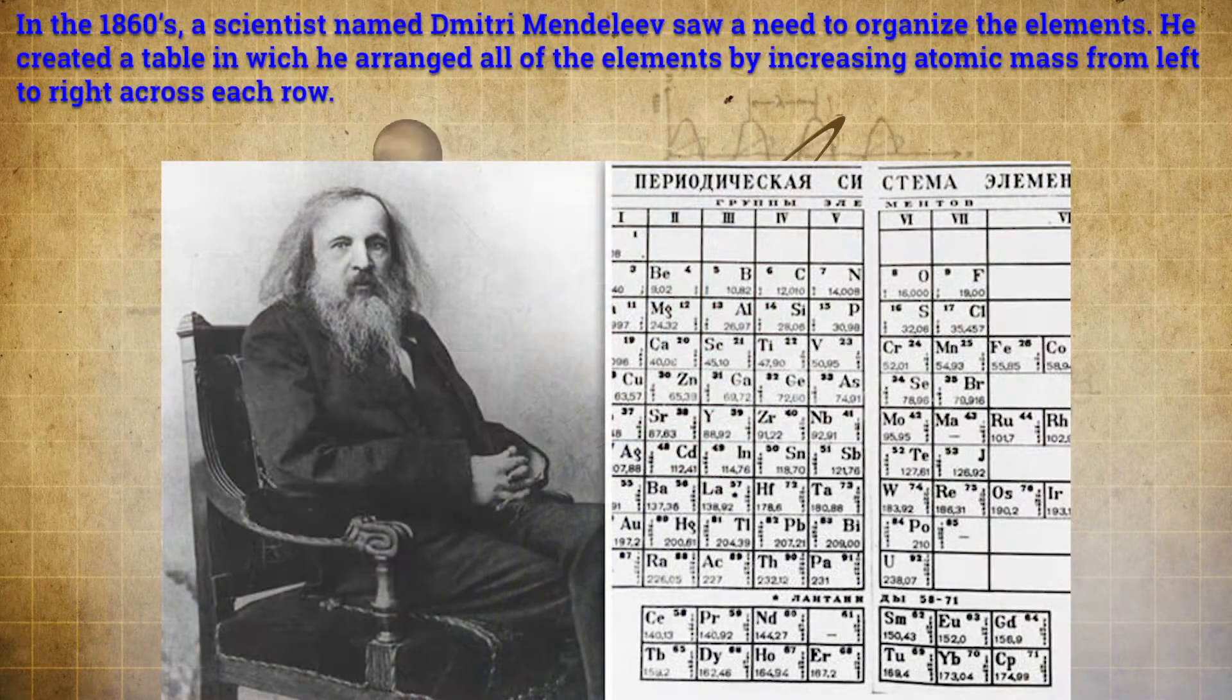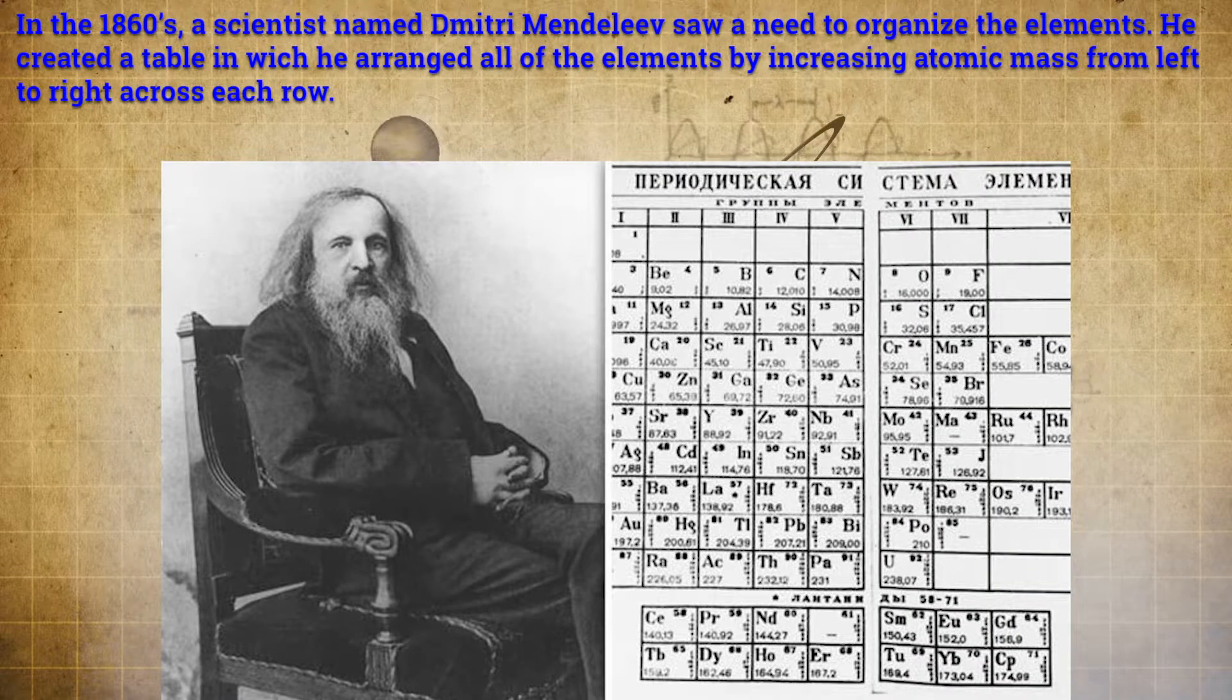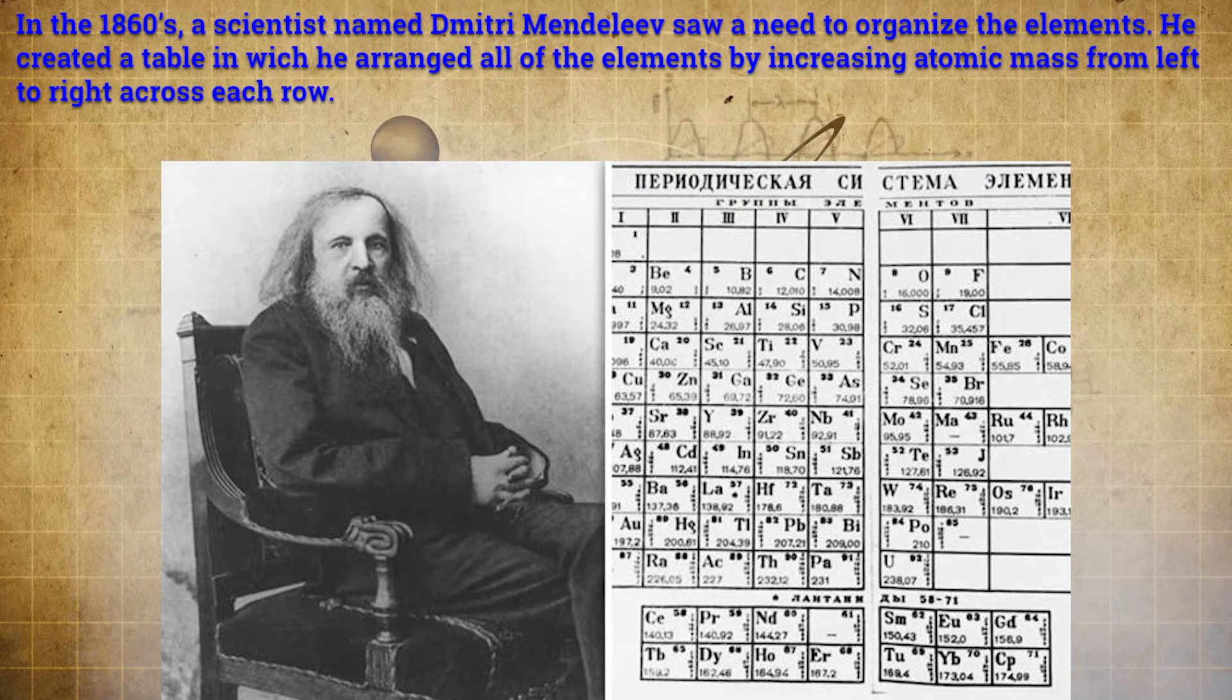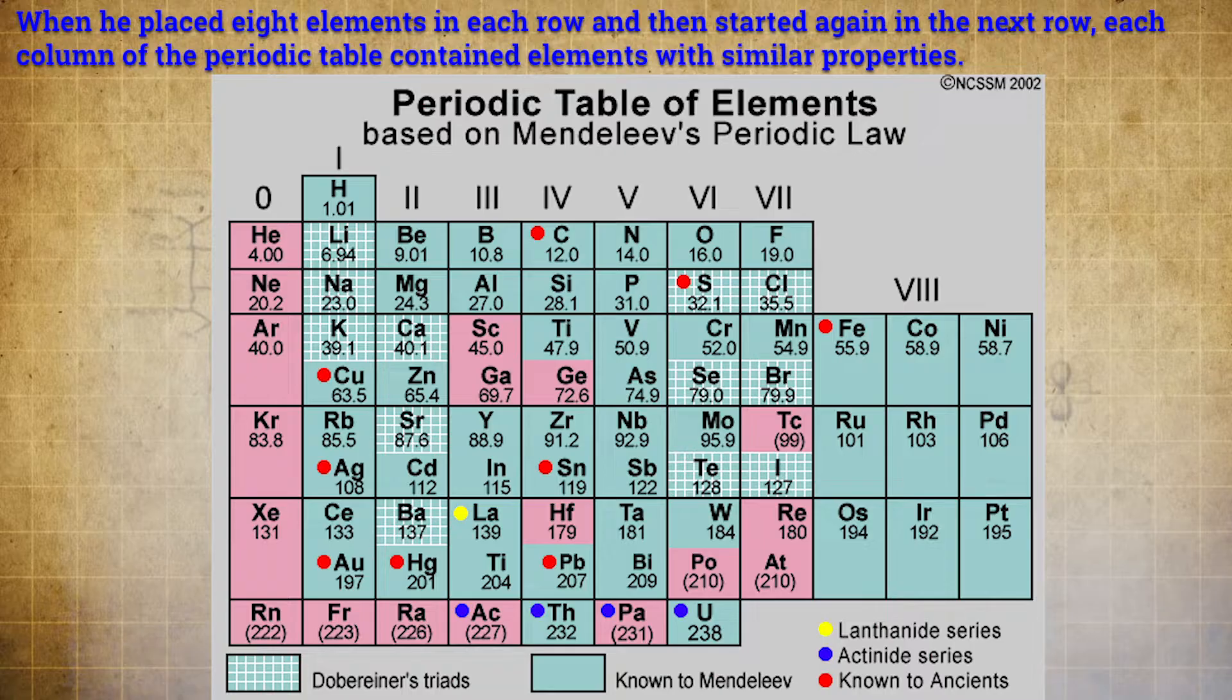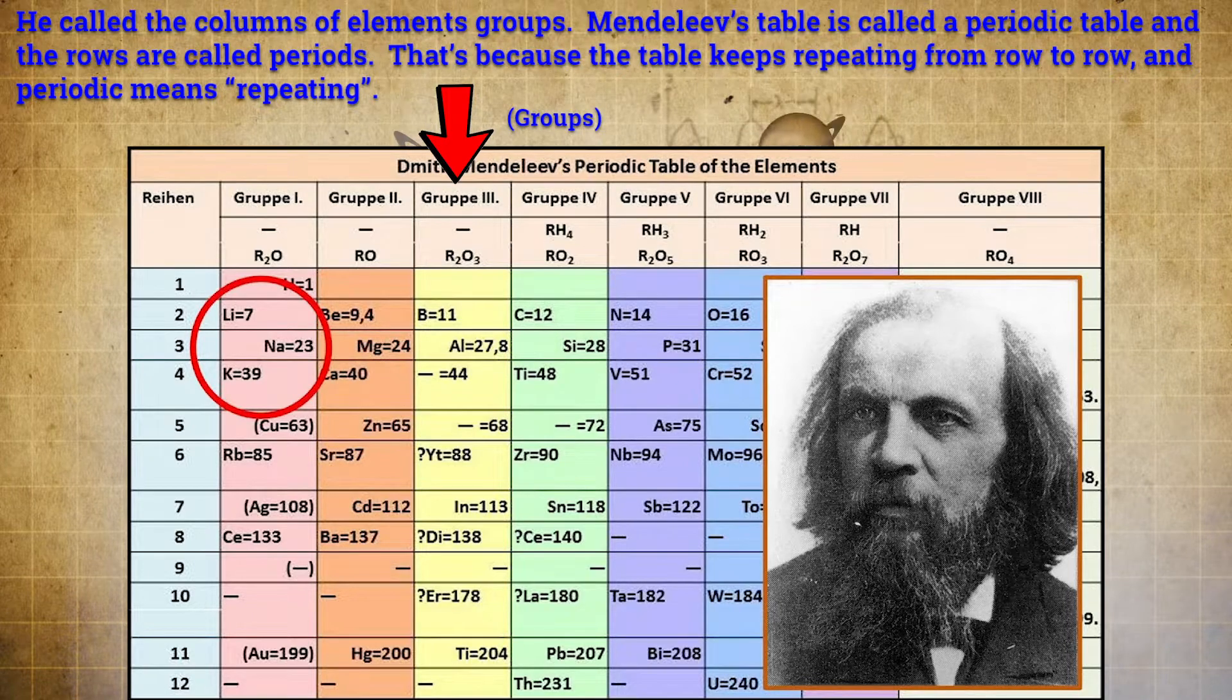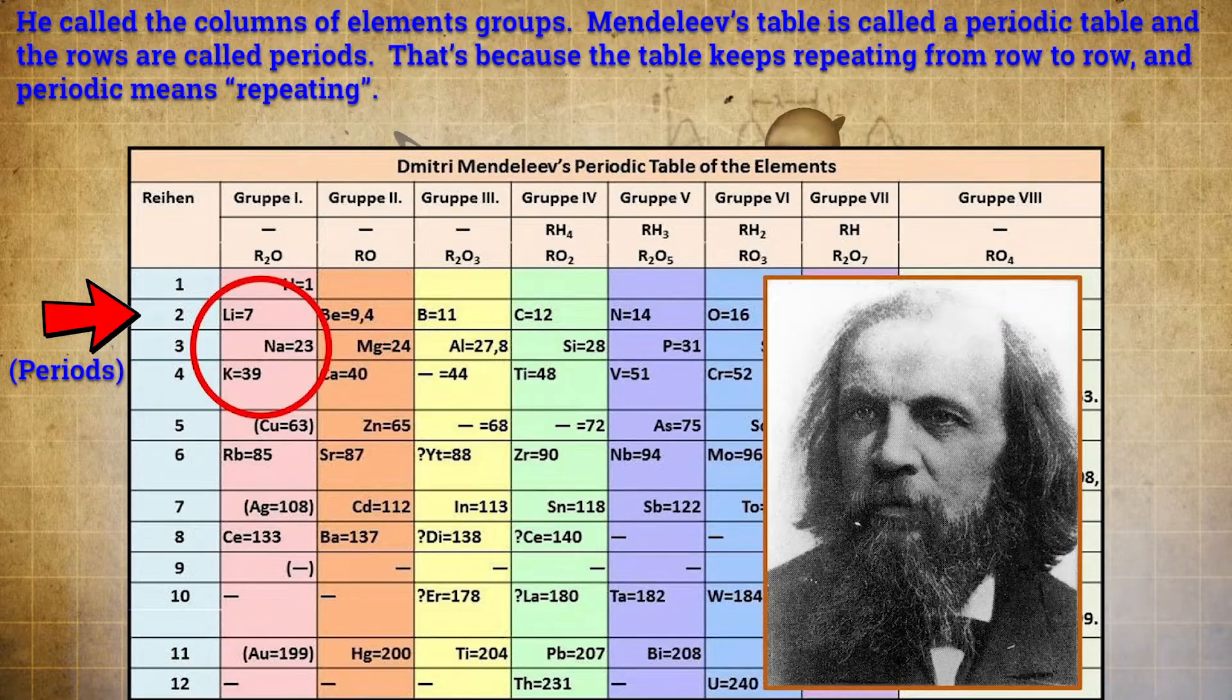Let's talk about the first periodic table. In the 1860s, a scientist named Dimitri Mendeleev saw a need to organize the elements. He created a table in which he arranged all of the elements by increasing atomic mass from left to right across each row. When he placed eight elements in each row and then started again in the next row, each column of the periodic table contained elements with similar properties. He called the columns of elements groups. Mendeleev's table is called a periodic table and the rows are called periods. That's because the table keeps repeating from row to row and periodic means repeating.